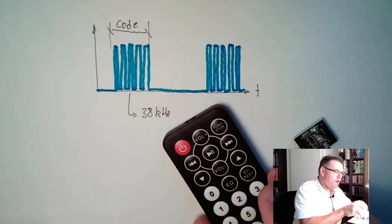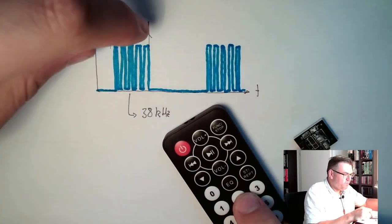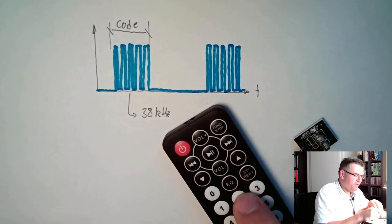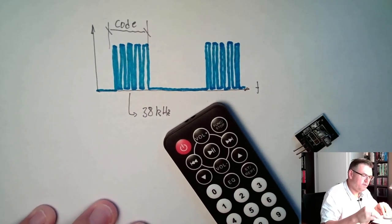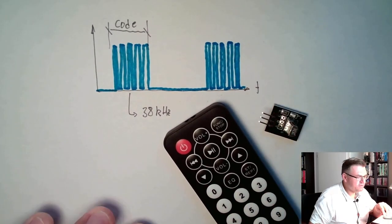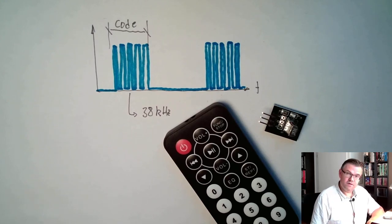Here the code is hidden. So whenever we press a button here, we produce a different length of code. And this infrared receiver here is receiving this different length of code.